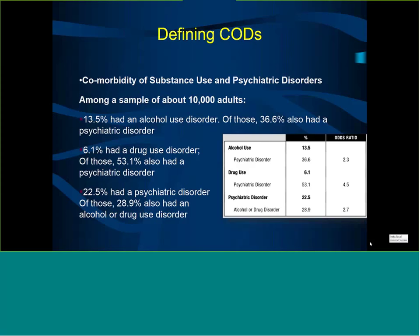Looking at odds ratios ranging from 2.3 to 4.5, whichever way you look at it, every patient who walks through the door — whether with a psychiatric disorder or a substance use disorder — there is at least a one-in-two chance they are going to have another disorder simultaneously.